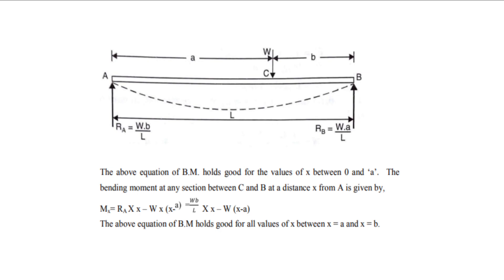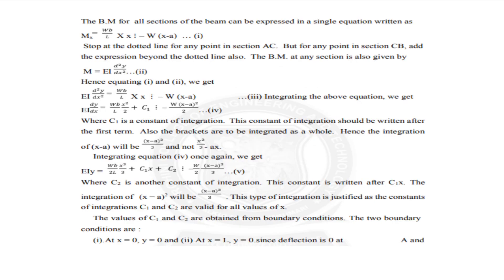Mx equals RA into X minus W into X minus A equals WB by L into X minus W into X minus A. The above equation of bending moment holds for X equals A and X equals B. So here the bending moment for all sections of the beam can be expressed in a single equation written as Mx equals WB by L into X minus W into X minus A. This is equation number 1.